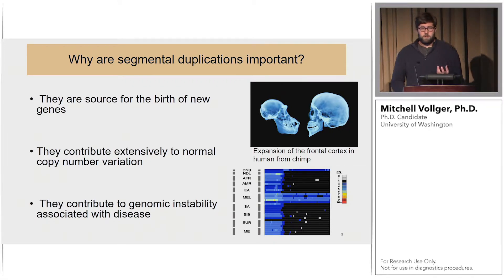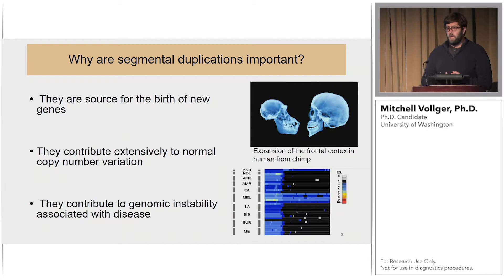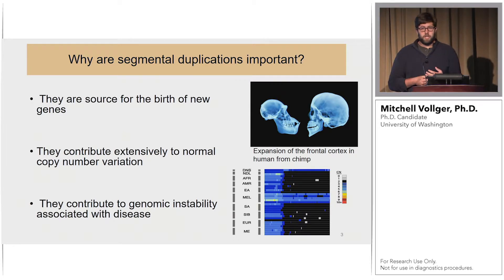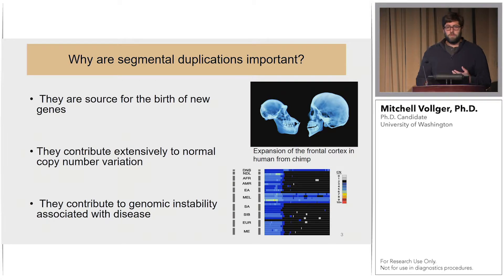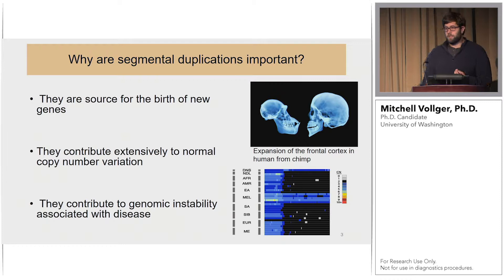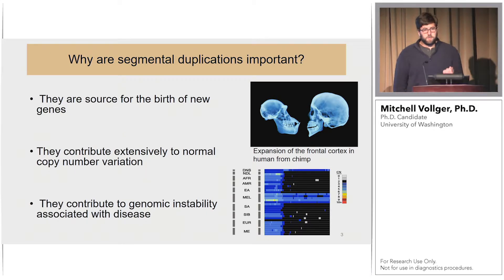Segmental duplications are very important in our genome. First, they're the source for the birth of new genes. Several gene families, such as Notch2 and SRGAP2, have expanded in the human-chimp lineage and are responsible for the expansion of our frontal cortex. Additionally, segmental duplications make up only 5 percent of our genome, yet they constitute 50 percent of the normal copy number variation we see — so chances are any copy number difference between individuals lands in this 5 percent.